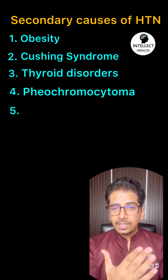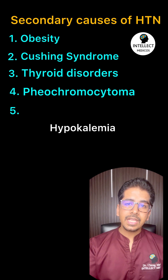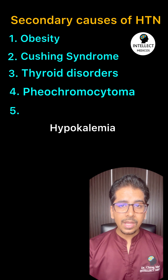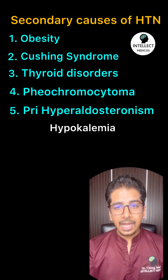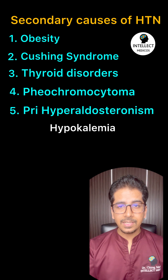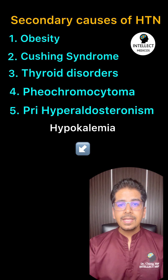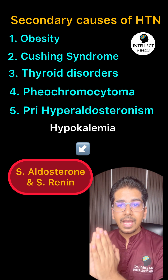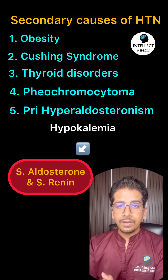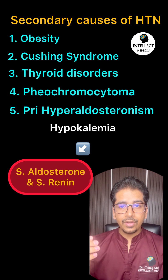Fifth, if in the investigation there is hypokalemia, think about primary hyperaldosteronism and send the sample for serum aldosterone and serum renin, then calculate the ratio.